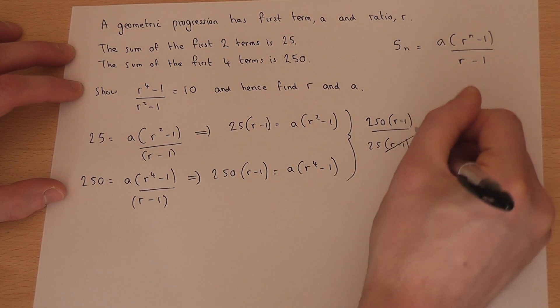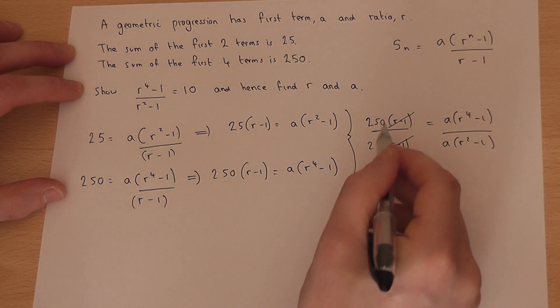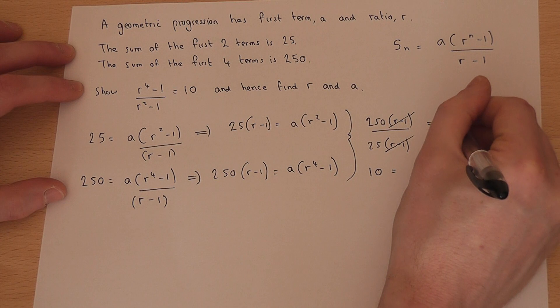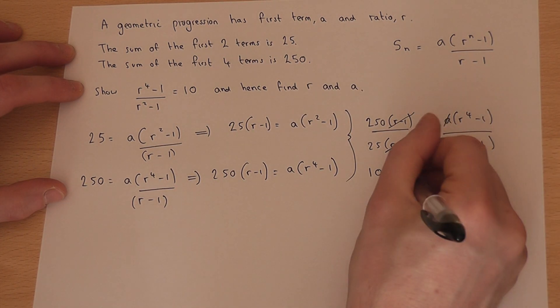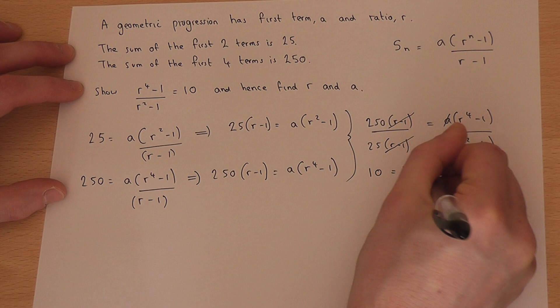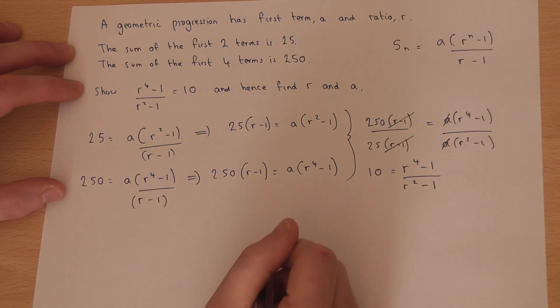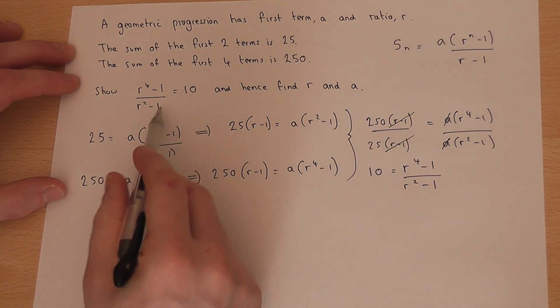The (r - 1)s cancel out. 250 over 25 is 10. Then the a's cancel out. So 10 equals (r⁴ - 1)/(r² - 1). I've therefore shown the required result.